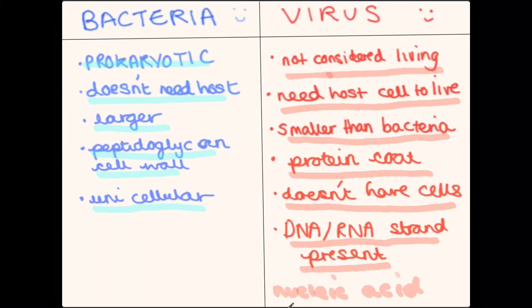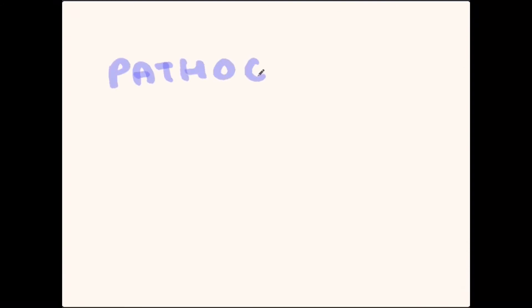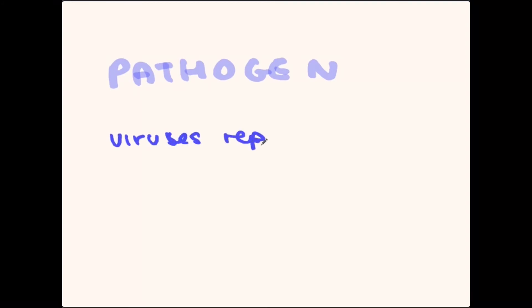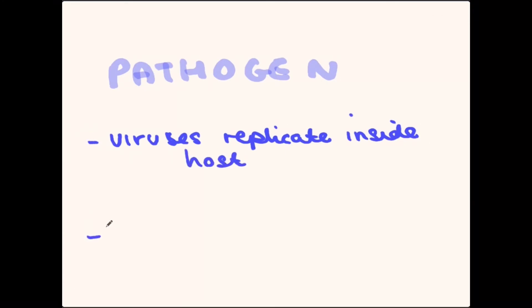One last thing to mention: they both are pathogens. However, viruses need a host cell to live. Since they are both pathogens that can cause diseases, they do both reproduce and replicate. Viruses replicate inside the host and can actually damage and kill the host. Bacteria can reproduce very quickly and produce toxins.